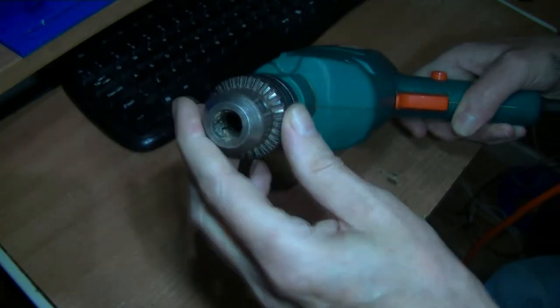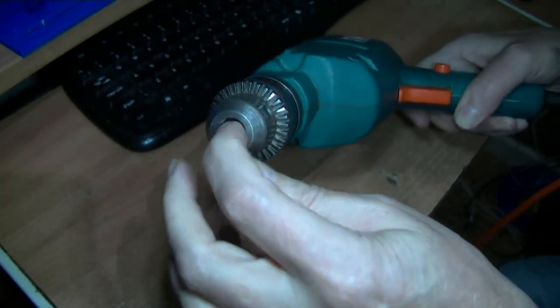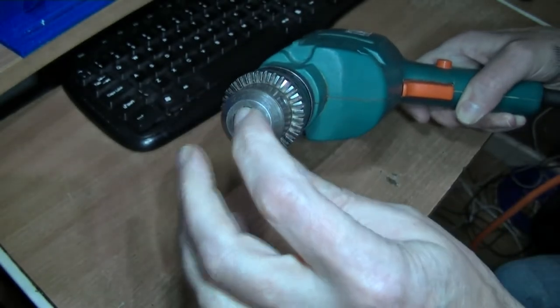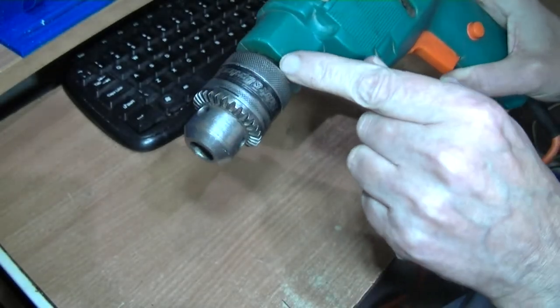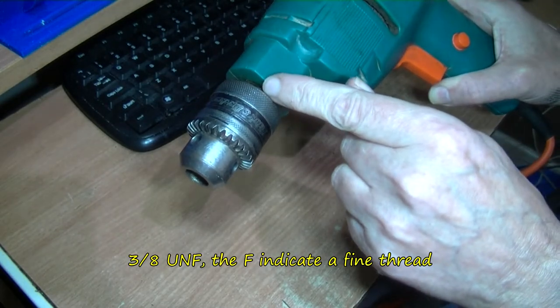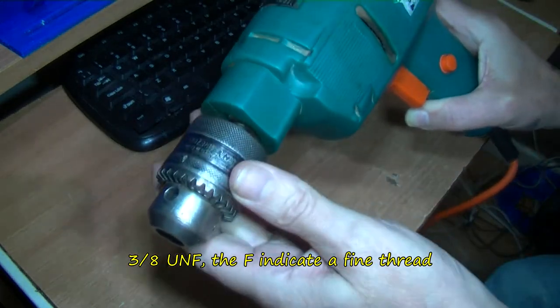When they say half inch chuck, they mean, well, it's 13 mil, this chuck, actually. They mean the opening there, not the actual threads here. It's three eighths UNF fine thread.